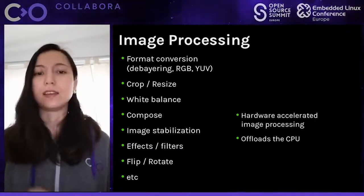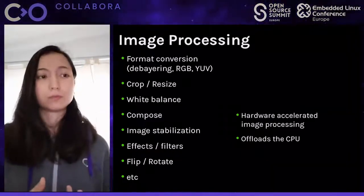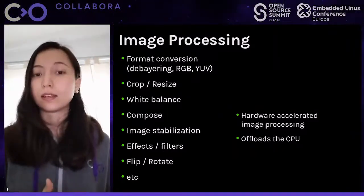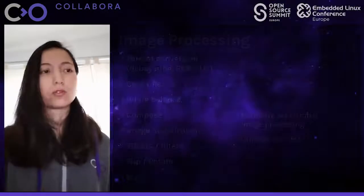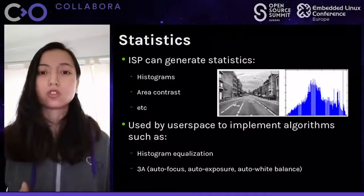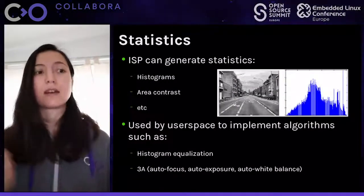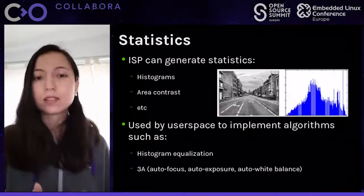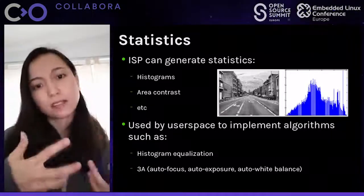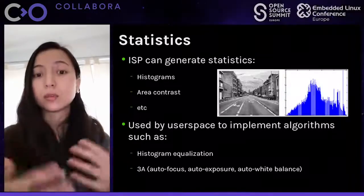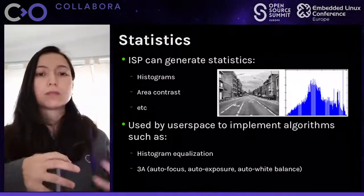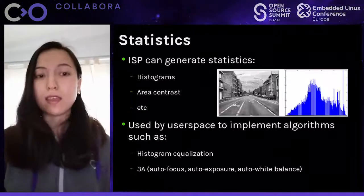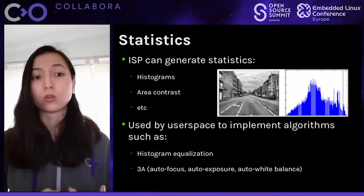ISPs can also perform effects, filters, flip, rotate, and several others. These are processing operations performed by the hardware that help offload your application. An ISP can also generate statistics such as histograms, error contrast, and others, which are used by applications to implement algorithms that read those statistics and reparametrize the ISP to improve the image on the fly. Examples of these algorithms are histogram equalization and what we call 3A: autofocus, auto exposure, and auto white balance.